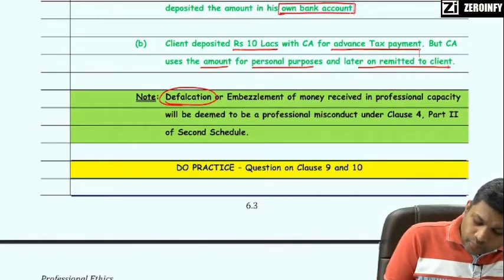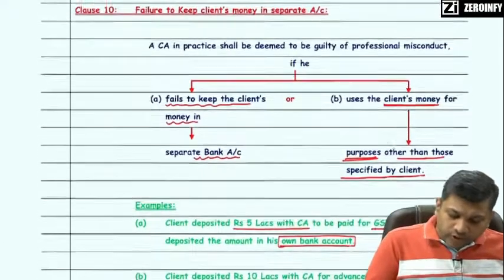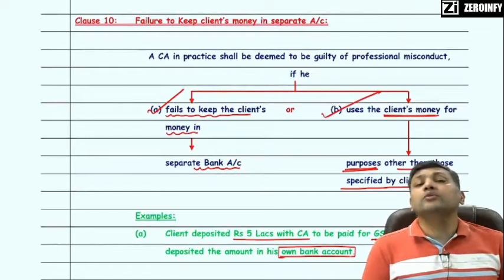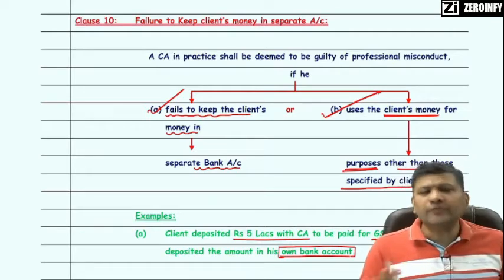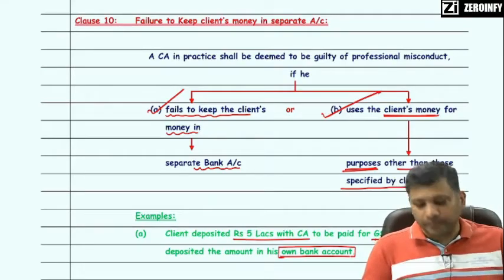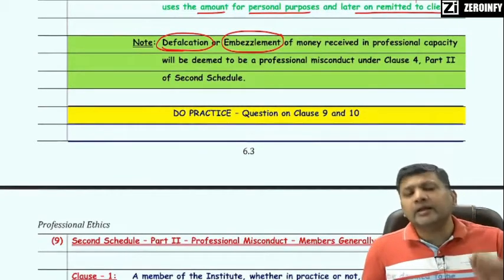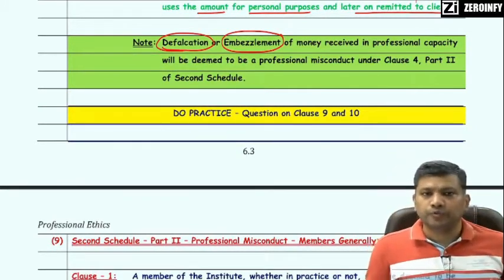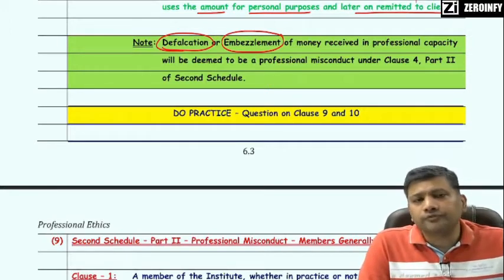Any defalcation or embezzlement of money received in professional capacity will be considered as professional misconduct under Clause 4 of Part 2 of Second Schedule. With this, we have completed all the clauses of Part 1 of the Second Schedule.